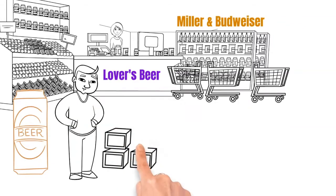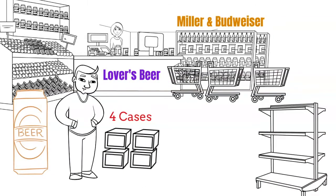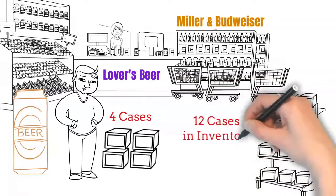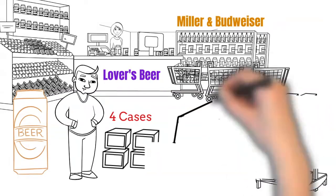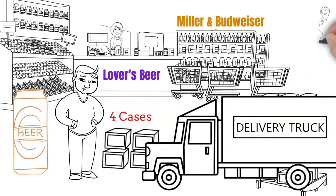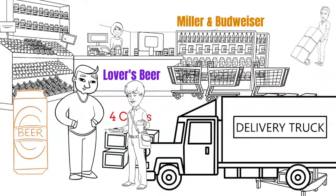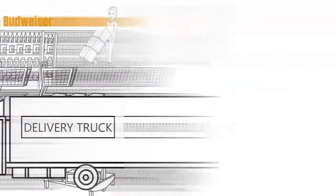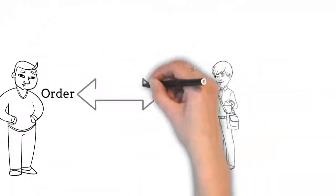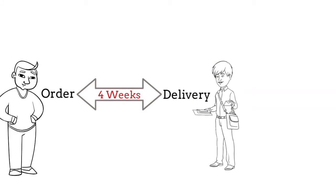Each week, the retailer sold on an average 4 cases of the Lover's Beers, and would maintain a steady stock of 12 cases in the inventory. Each week, the distributor's truck would arrive at the back of his store and unload 4 cases of the Lover's Beer, and he'd hand over the trucker his order written on a form. The order he'd place each week would arrive at his store after 4 weeks. That's the lead time the distributor would take to ship the order.